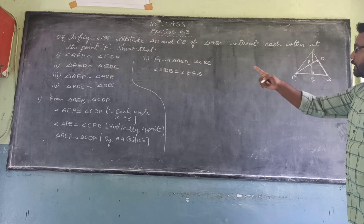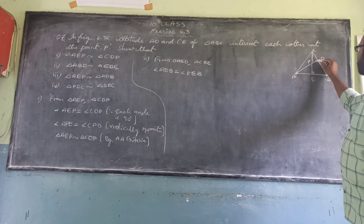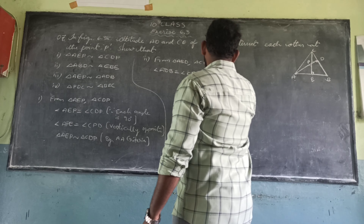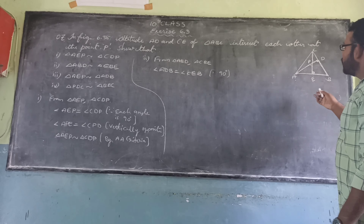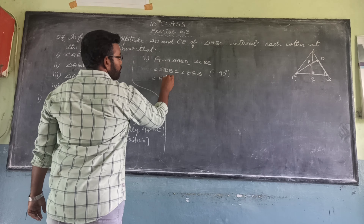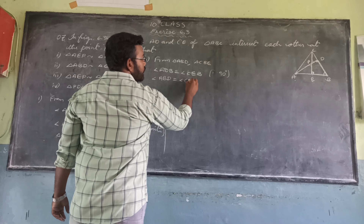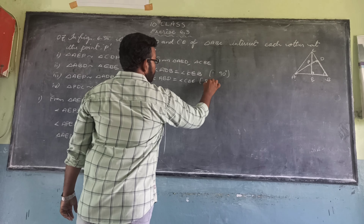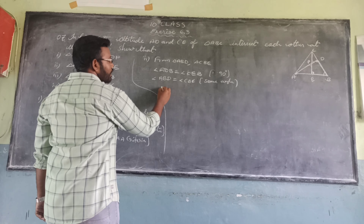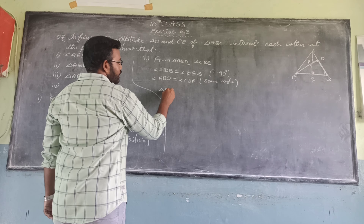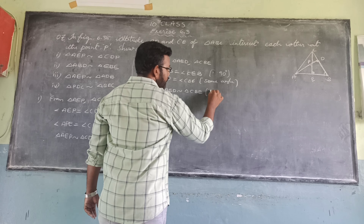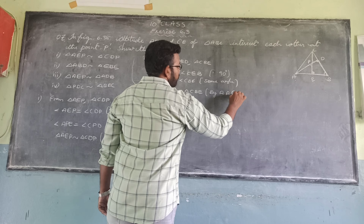From these two triangles, angle ADB equals 90 degrees and angle CEB equals 90 degrees, so those are equal. Angle ABD is equal to angle CBE — same angle. By using the AA (angle-angle) criterion, we can say that triangle ABD is similar to triangle CBE.